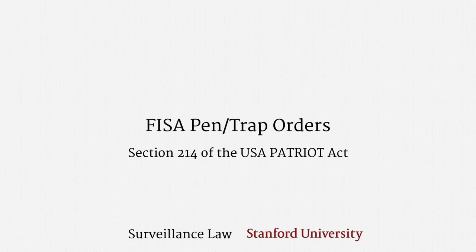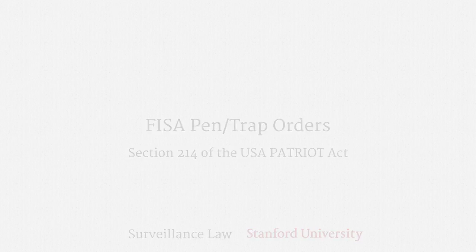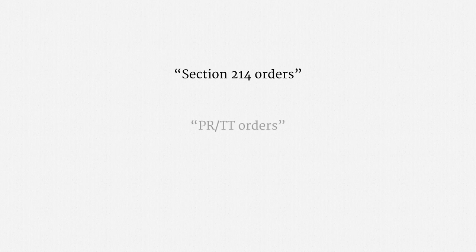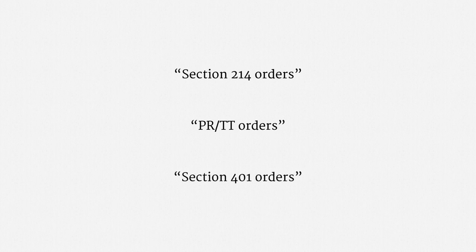This short lecture covers FISA pen trap orders. Pen registers and trap-and-trace devices were added to FISA in 1998, then overhauled by Section 214 of the USA Patriot Act. That's why these are sometimes called Section 214 orders. In intelligence lingo, they're often dubbed PRTT orders. And since the pen trap provisions are Section 401 of FISA as amended, they're also sometimes called Section 401 orders. They're all the same thing.